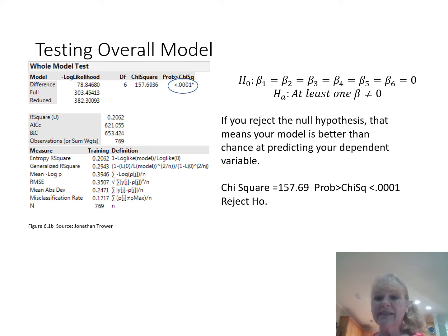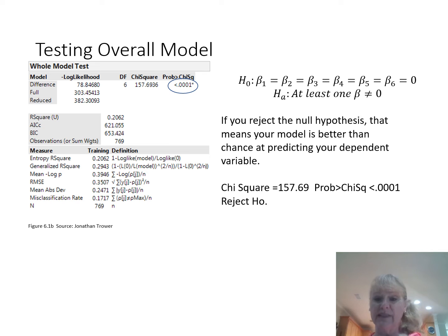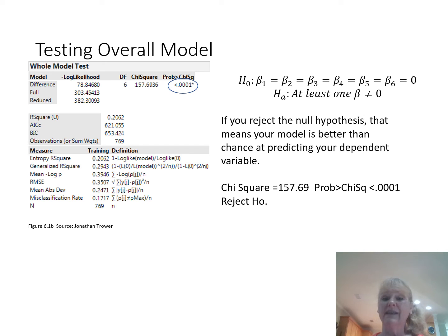Our hypothesis looks just the same. You take the number of variables in the model, set their coefficients all equal to zero, and the alternative hypothesis says at least one of those betas does not equal zero. If you reject the null hypothesis based on your chi-square test — not an F-test, but chi-square — if its probability is less than alpha, then at least one of those variables is a good predictor.